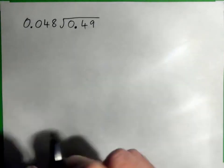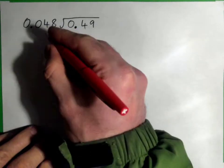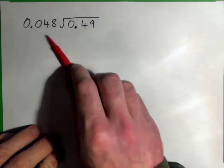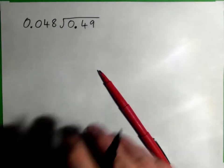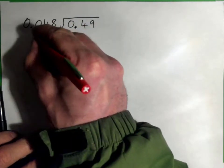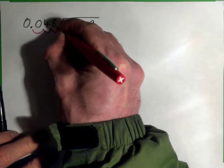So 0.048 into 0.49. We need to get the decimal point out of the divisor. So we need to move this decimal point one, two, three spots to the right.